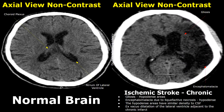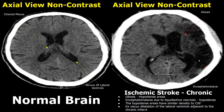A chronic ischemic stroke is considered when the time from onset is more than three weeks. It includes many features. In gliosis, there is an increase in glial cells or astrocytes of the brain — this is also a repairing mechanism and is seen as a hypodense area. In encephalomalacia, the infarcted brain tissue is replaced by cerebrospinal fluid. There will be degeneration of brain tissue and it will be replaced by fluid.